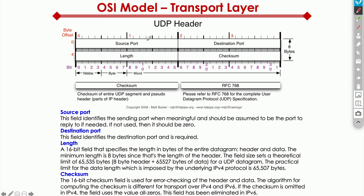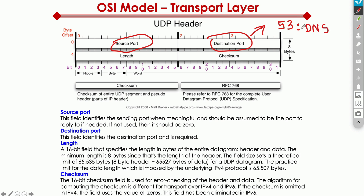Let's quickly take a look at the UDP header. I'm not going to go super deep, but just to give a quick overview: source port and destination port are important, especially the destination port, because that determines what we're trying to access. For example, if it's DNS, that's port 53 — that's what DNS is mapped to. So if you want to access DNS, that request is sent over port 53.